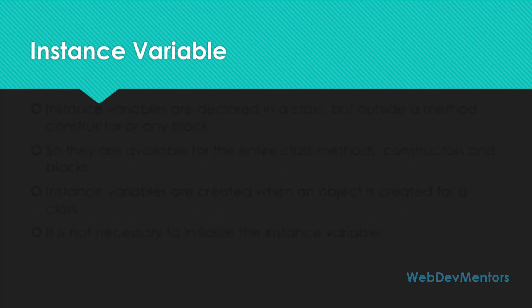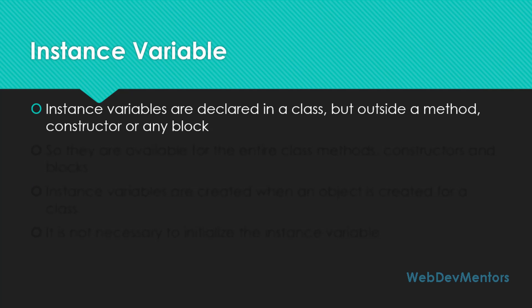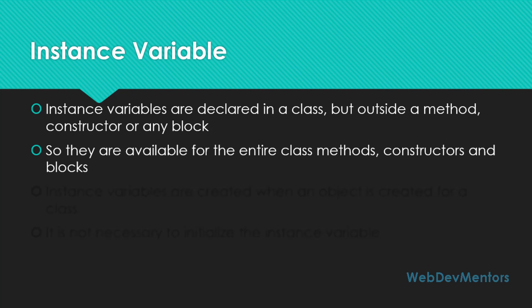Instance variables are declared in a class but outside a method, constructor, or any block of code. You can find the instance variable in a Java class right after the class has been declared — right after you write the class name and open the braces. They are available for the entire class: methods, constructors, and blocks. If you want a single variable to use throughout the entire class, you can declare it as an instance variable.